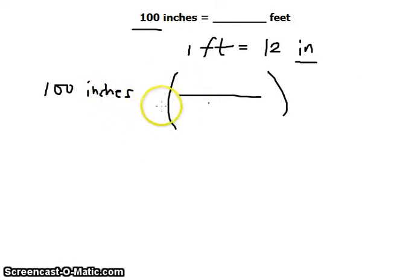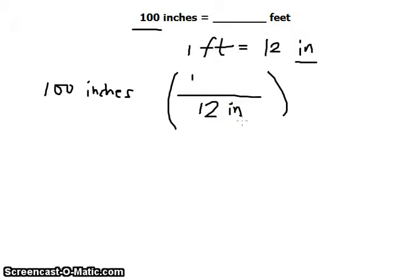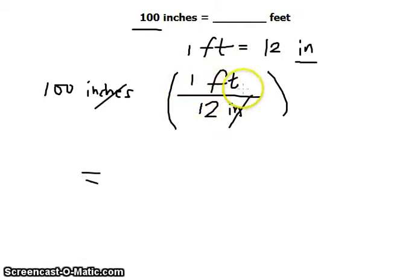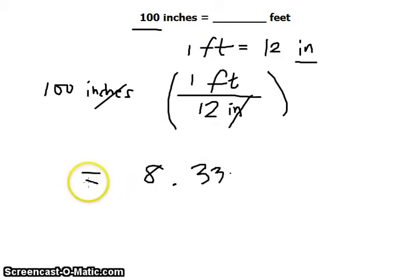We place in the denominator the unit that we want to cancel out, and in the numerator the unit that we desire, which is miles. So we have 0.6214 miles over 1 kilometer. This whole expression is just equivalent to 1 — we're not changing anything mathematically, we're just converting to another unit. The kilometer cancels out and we perform the operation.